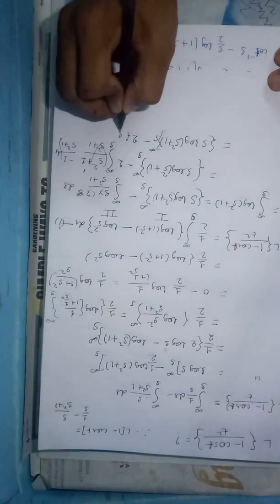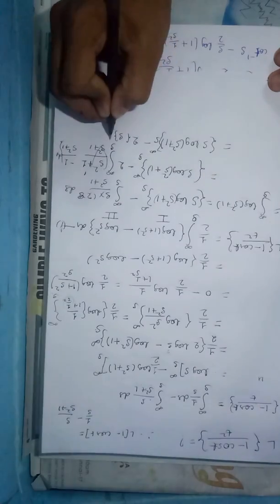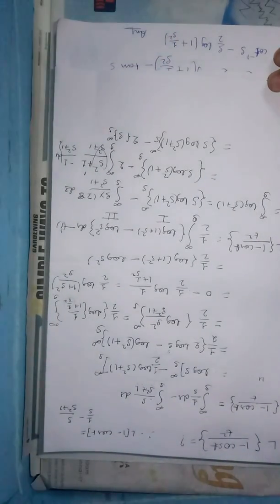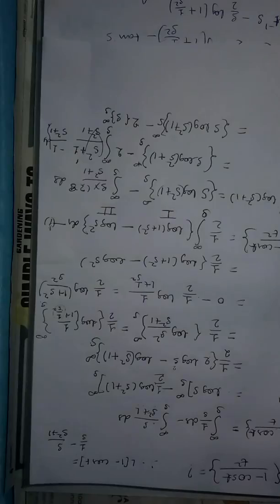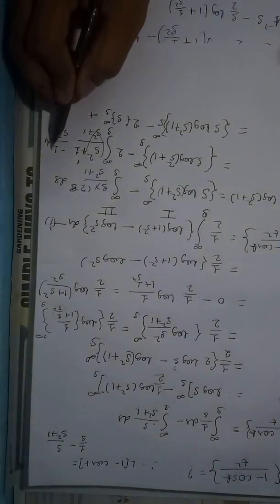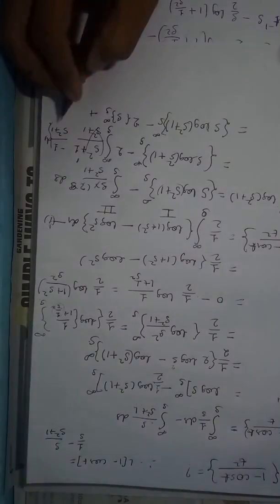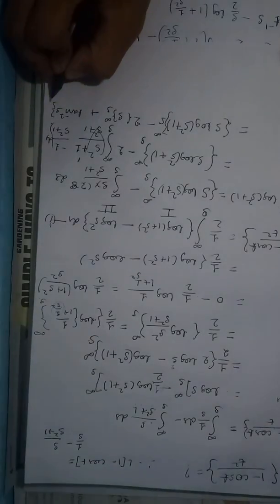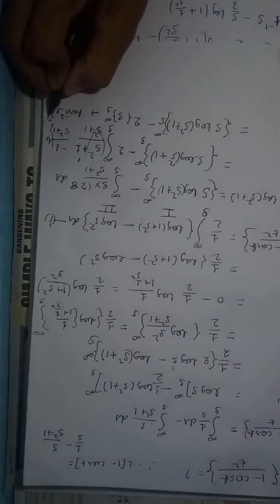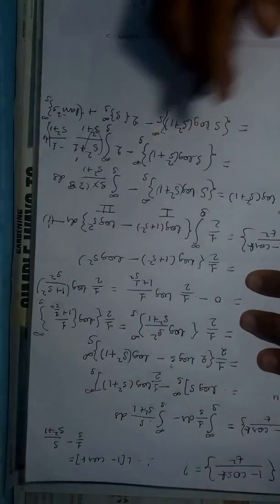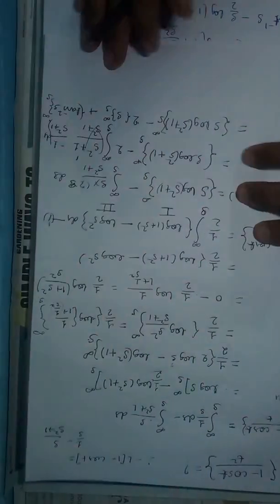So putting it together, I = s·log(s² + 1) from s to infinity, minus 2·S from s to infinity, plus 2·tan⁻¹ s from s to infinity.